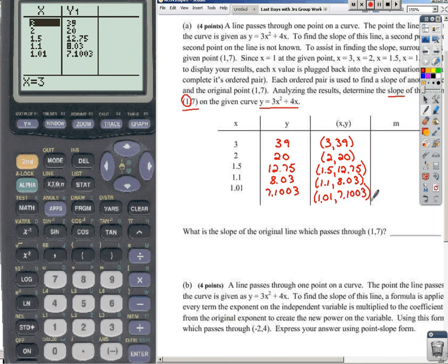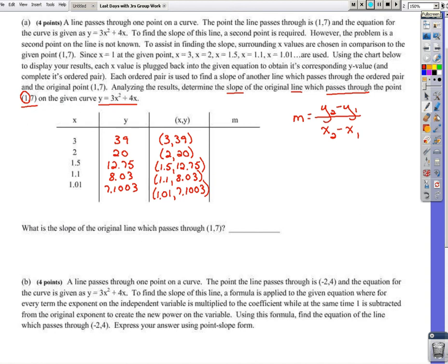Okay, so now that we have some second points to work with, which remember, that's part of the problem here. We're trying to find the slope of the line that passes through one point. We only know how to find slopes of lines given two points. So this column now basically represents a second point that we can use.